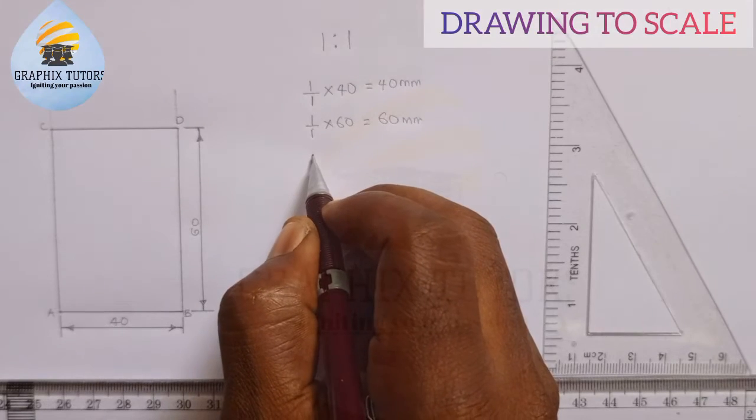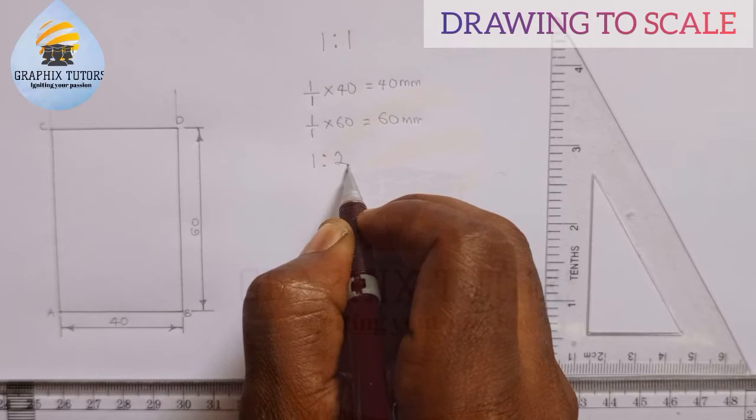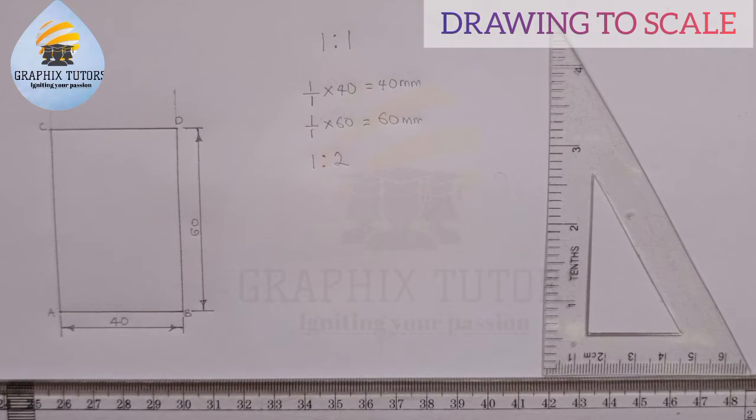Now let's take for instance again another one, saying one is to two, one ratio two. Before we conclude if it is reduction or enlargement, let's see what is happening.